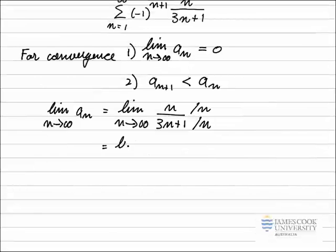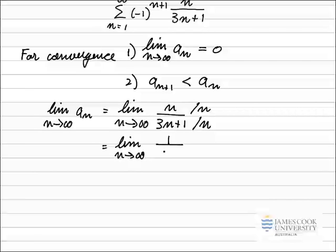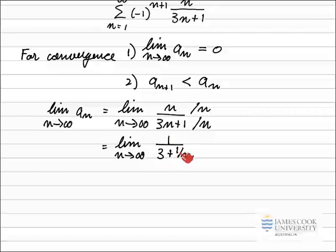Dividing top and bottom by n gives the limit as n approaches infinity of 1 over 3 plus 1/n. Dividing both terms on the bottom by n: 3n over n gives 3, and 1 over n gives 1/n. As n approaches infinity, 1/n approaches 0, so this whole limit equals 1/3.